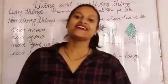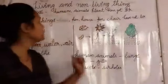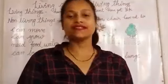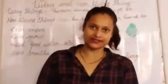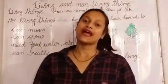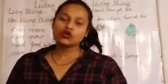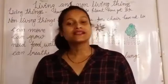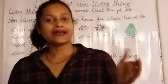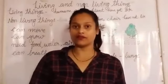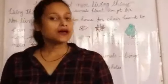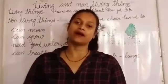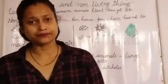Good morning children. This is our new chapter: living and non-living things. We see many things around us — we see plants, animals, human beings, insects, wall, pen, duster, fan, fridge, cooler, mobile phones. So many things! Some of them are living things and some of them are non-living things.